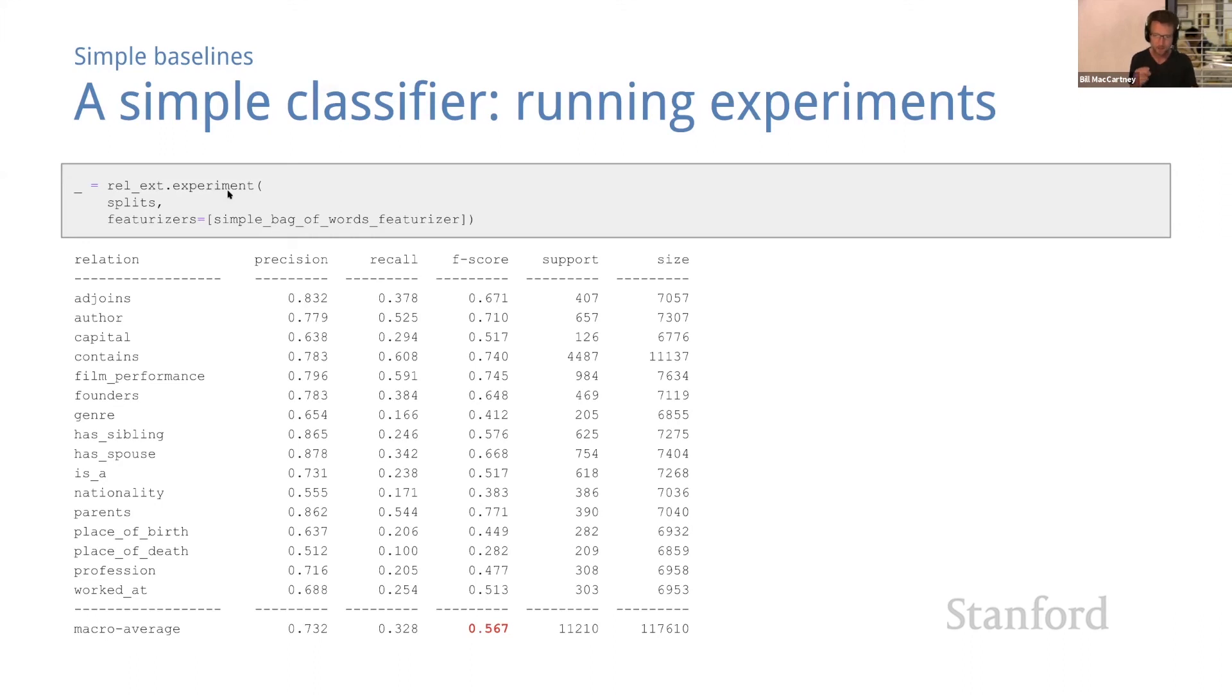Now here are the results of evaluating our simple bag of words logistic regression classifier. Let's take a closer look, because this is quite stunning. Even though this is just about the simplest possible classifier, we've achieved huge gains over the phrase matching approach. The first thing that jumps out is that our macro averaged F-score has jumped from 11.1% to 56.7%. And we see big gains in precision for almost every single relation and correspondingly big gains in F-score.